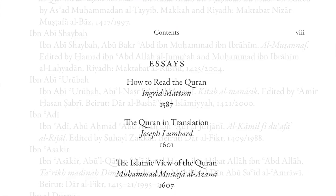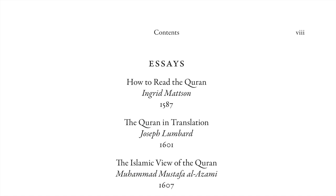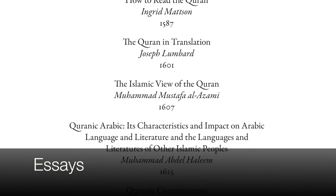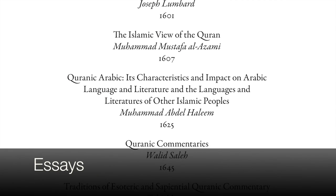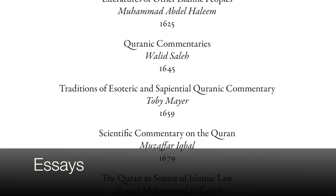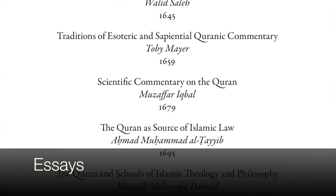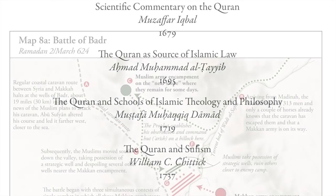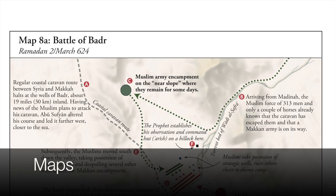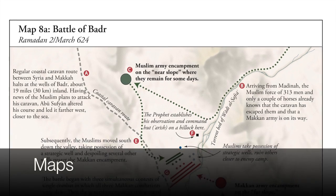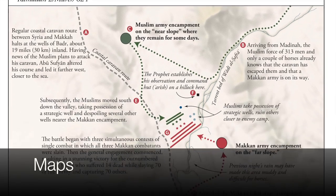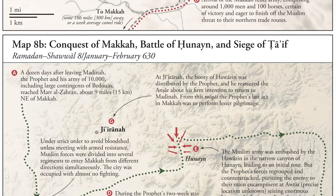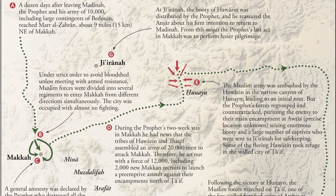The Study Qur'an also contains fifteen companion essays by various scholars on all aspects of the Qur'an and its place in Islamic religion and civilization. Eight pages of color maps are also part of the book, providing geographical information on Arabia and about important events related to the Qur'an.